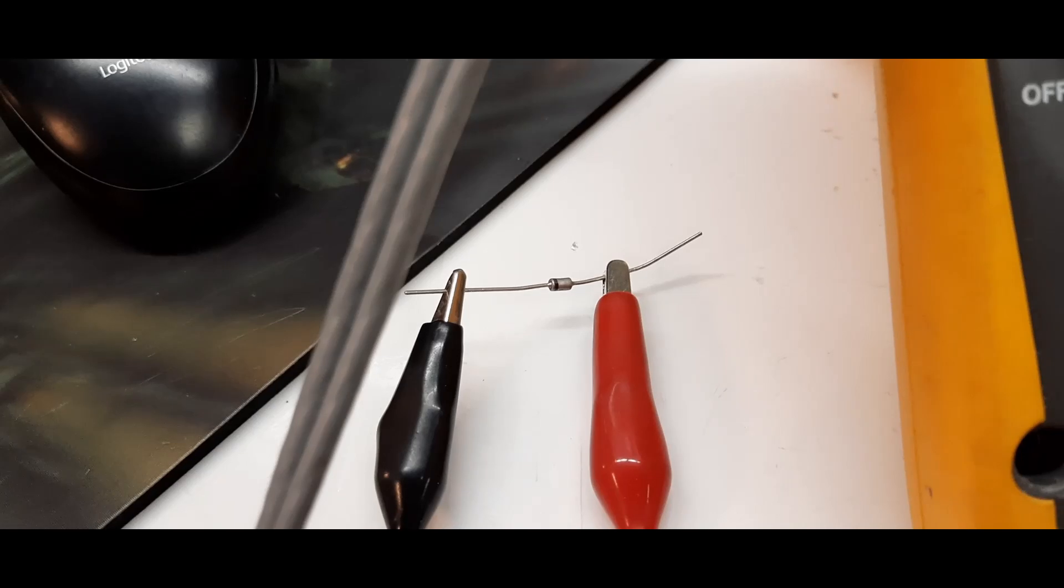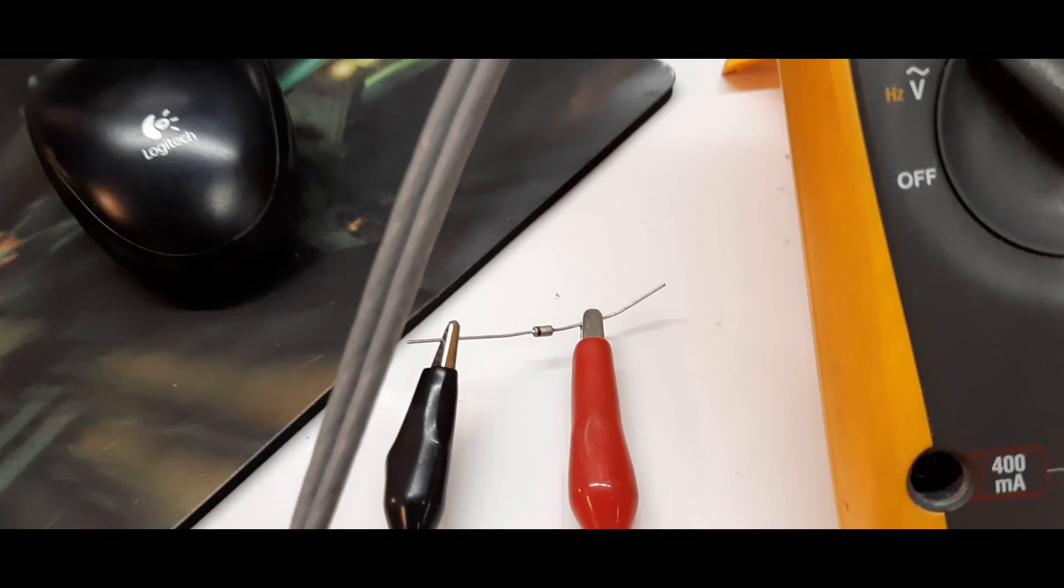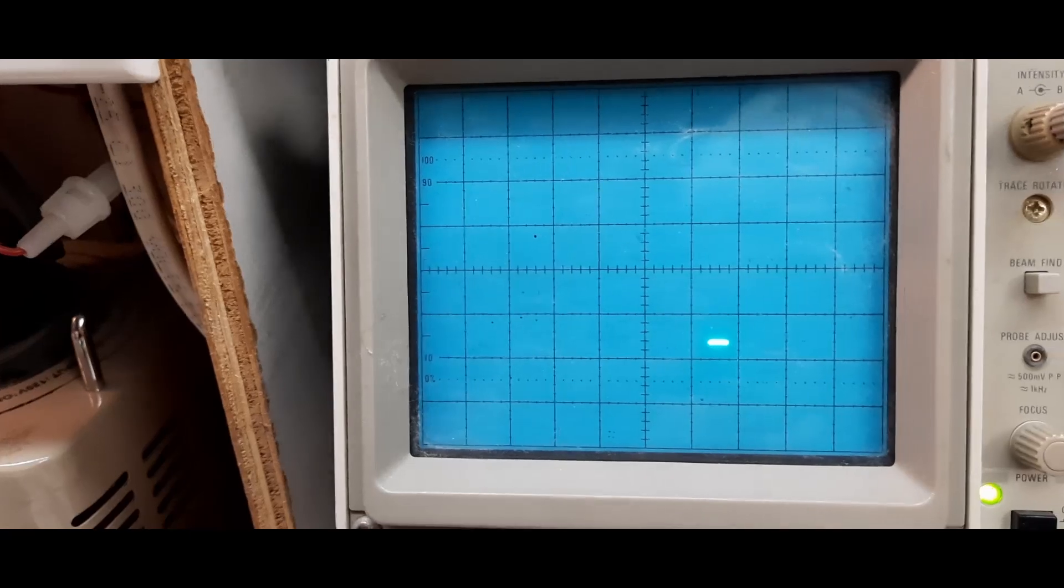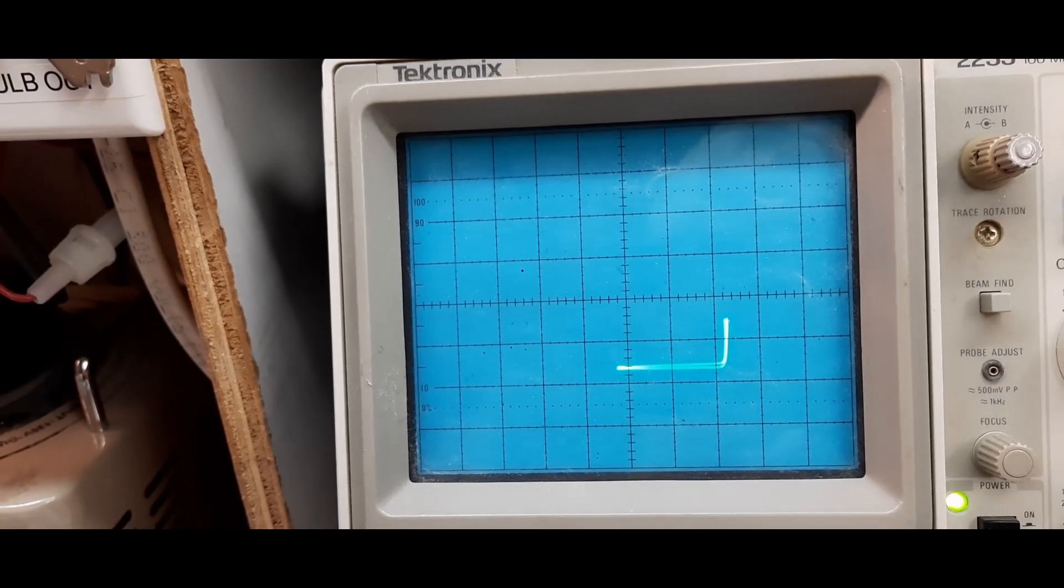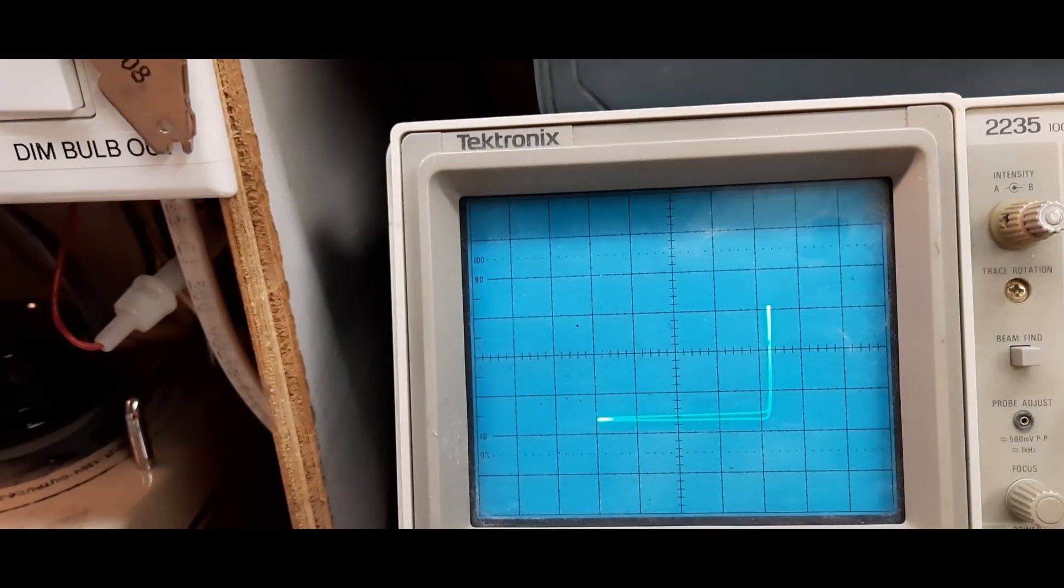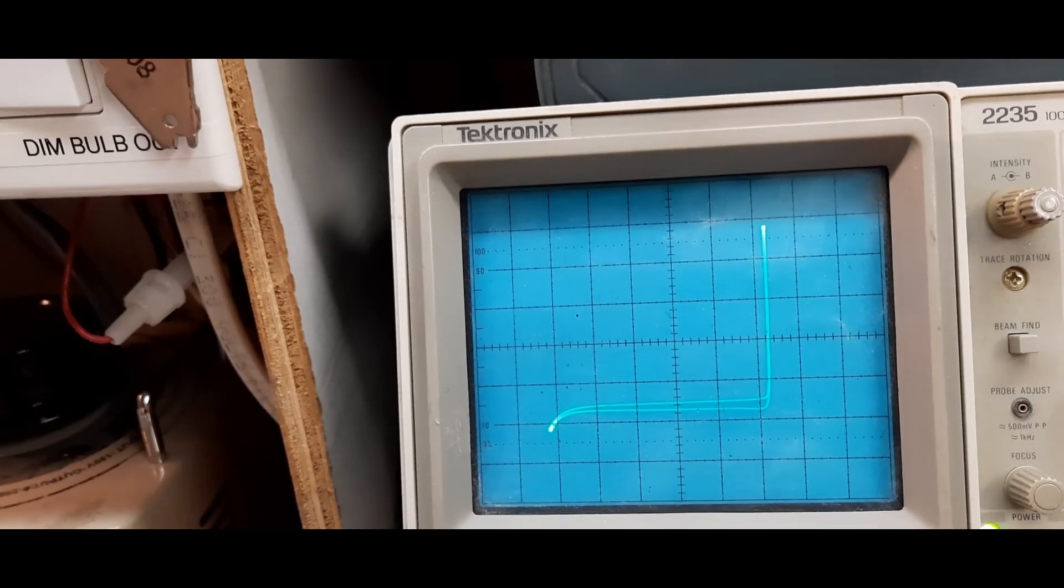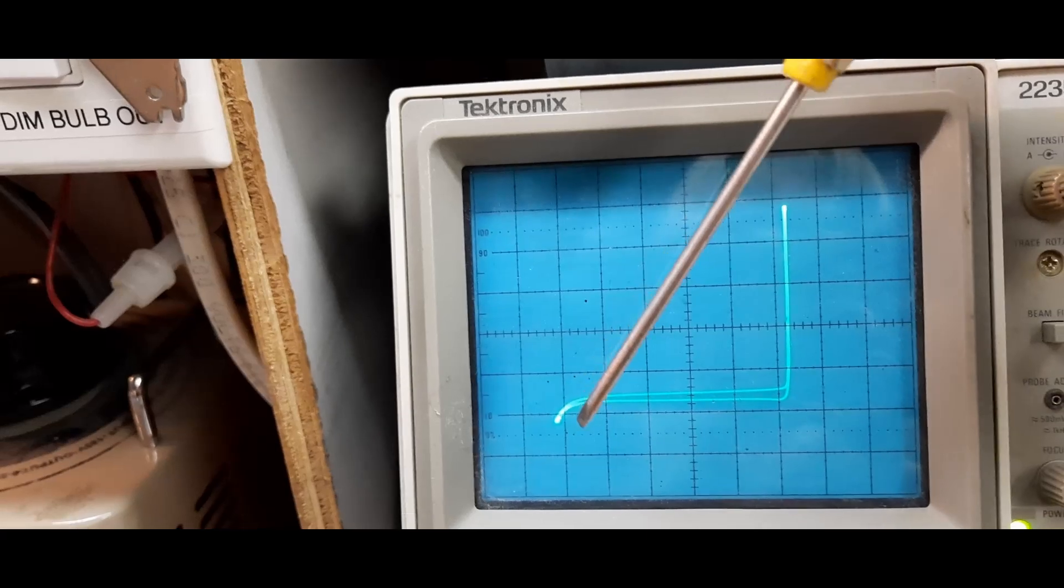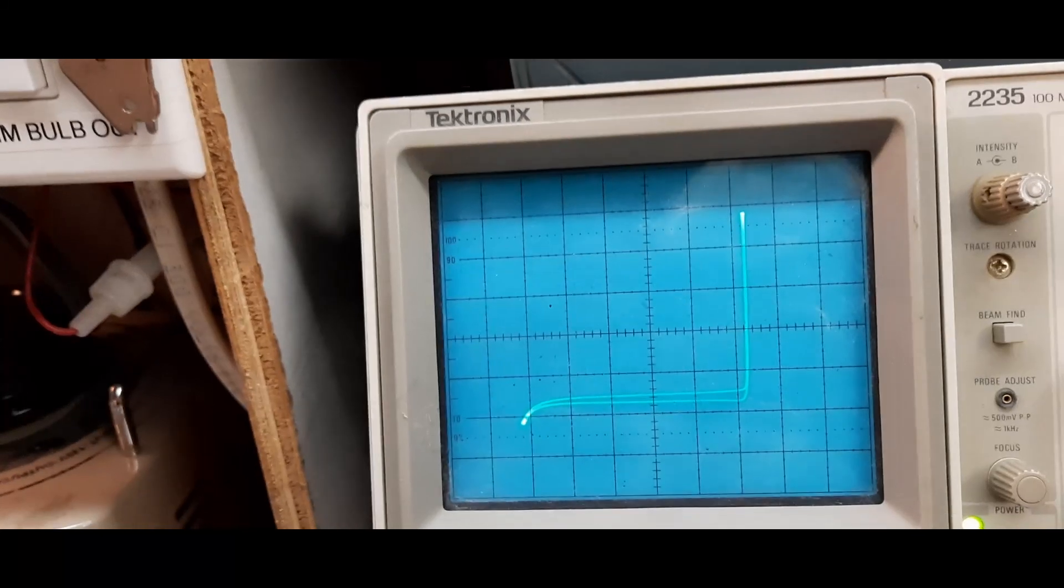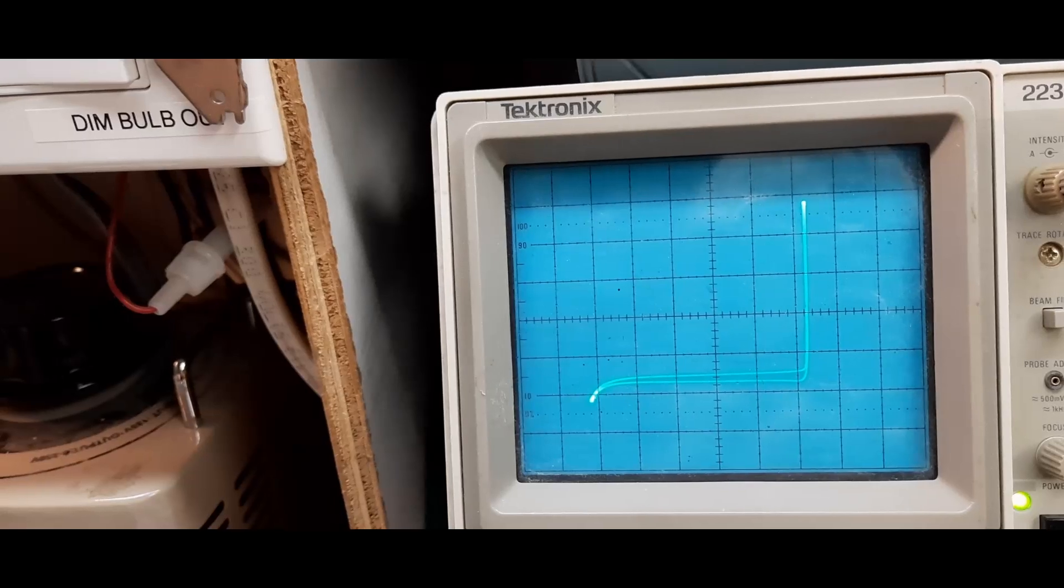I've got a 5.1 volt zener diode connected to our curve tracer. Let's take a look at the scope. I'm just increasing the voltage. There you can see the forward bias, and I'm slowly increasing it. And there you could see the reverse bias right there. The fact that we've got a reverse bias and a forward bias tells us this diode is a zener diode.